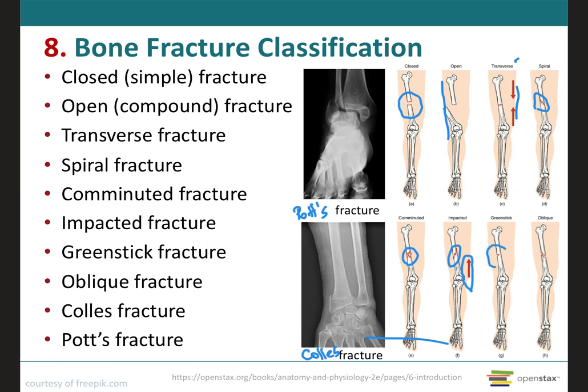We have what we call the greenstick fracture, which is a partial fracture in which one side of the bone is broken and the other side will bend — similar to the way a green twig breaks on one side while the other stays whole but bends. This type usually occurs in children whose bones are not fully ossified and contain more organic material than inorganic material.